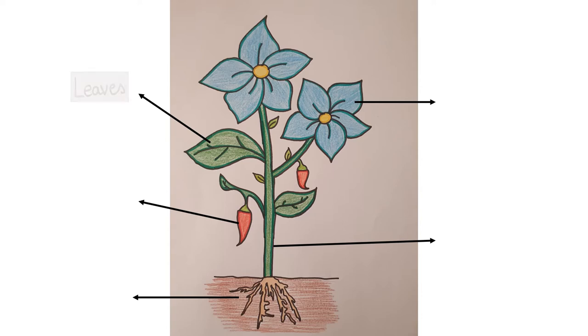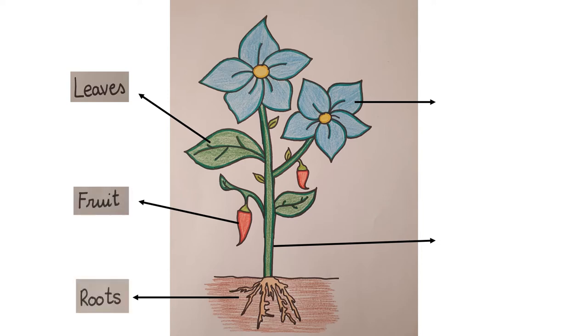It has got leaves, fruit, roots, flower, and finally the stem.